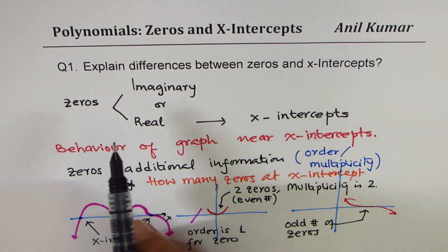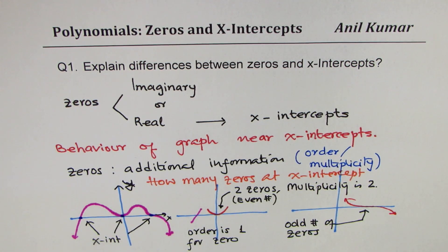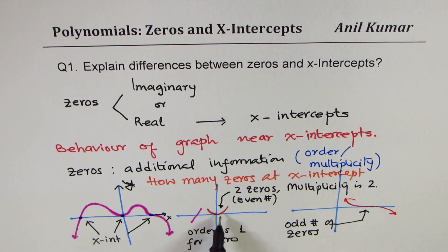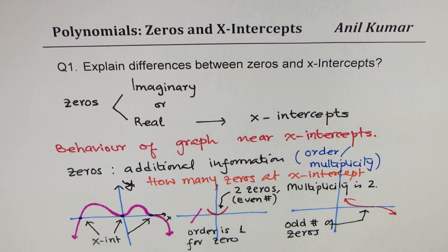So clearly, zeros could be imaginary or real. Real zeros also represent x-intercepts, but they have additional information: depending on the order or multiplicity of the zero, you know the behavior of the function near the x-intercept. If order is one it behaves like a linear function; if you have an even number of zeros it behaves like a parabola turning point; if odd, it goes through like a tilde shape — not a turning point. With that I hope the difference between zeros and x-intercepts is clear.